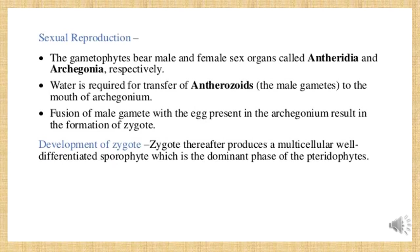In sexual reproduction, the gametophytes bear male and female sex organs called antheridia and archegonia. Water is required for the transfer of antherozoids to the archegonia — water is the medium of sexual reproduction. Without water, the process is incomplete. Fusion of the antherozoids and the archegonia occurs in the presence of water and gives rise to the zygote — a new young individual produced after fertilization.